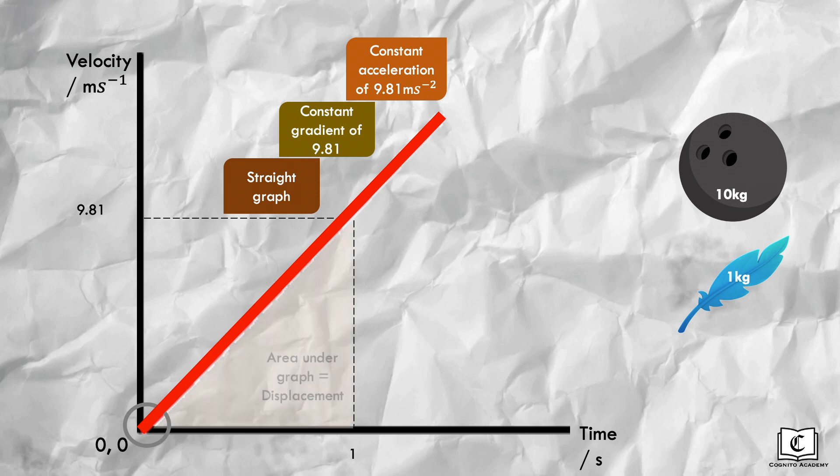Another feature of the graph is the area under it, which gives us the displacement of both objects. We can see that at the one second mark, area under the graph for both objects are similar as they share the same graph. Also to say that at any point of time, the displacement of both objects are the same, as seen in the clip.